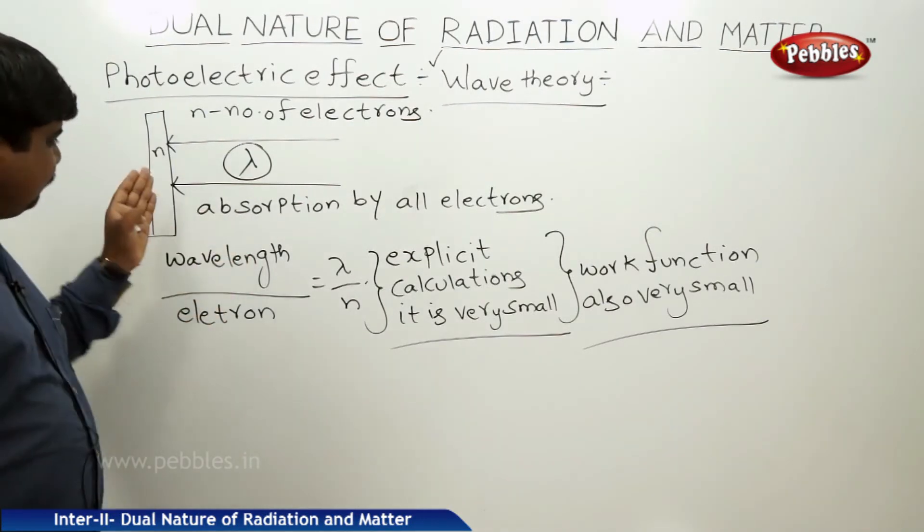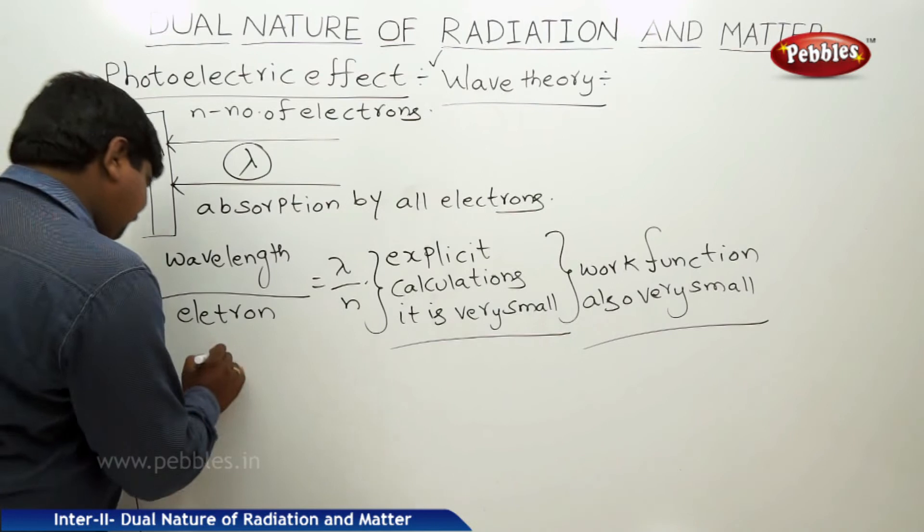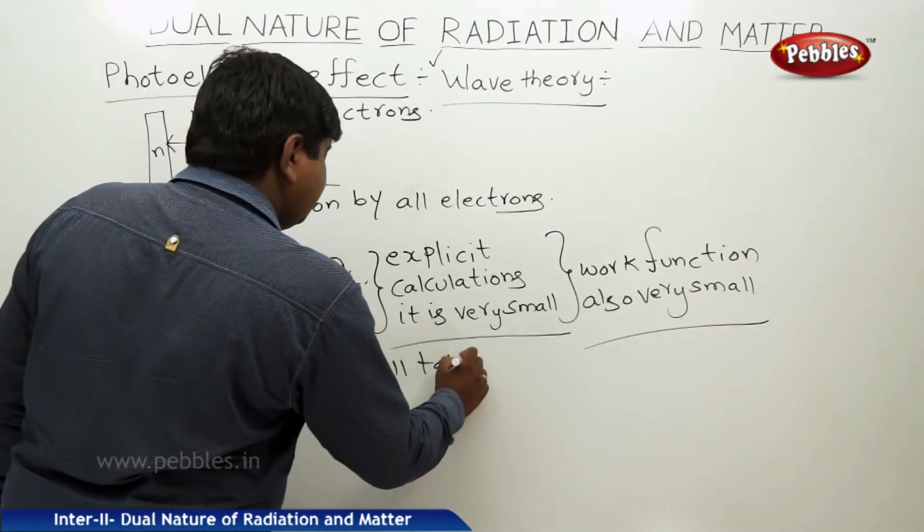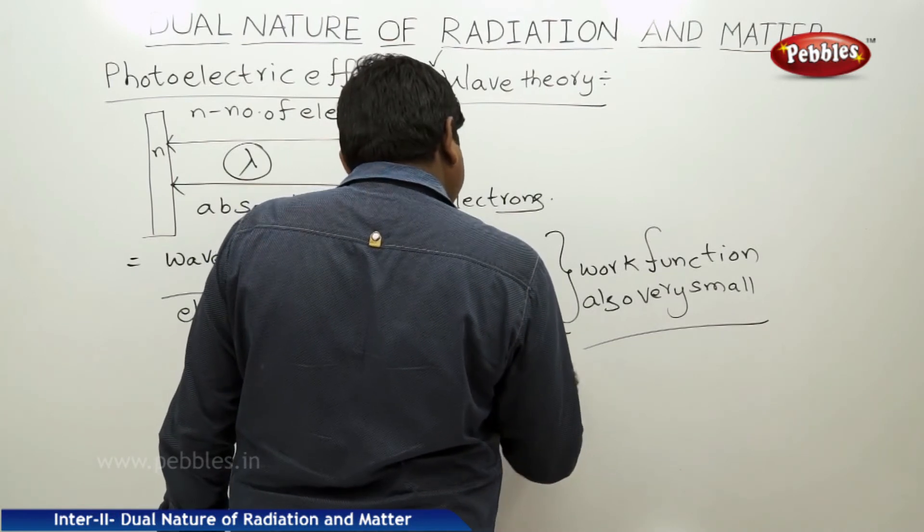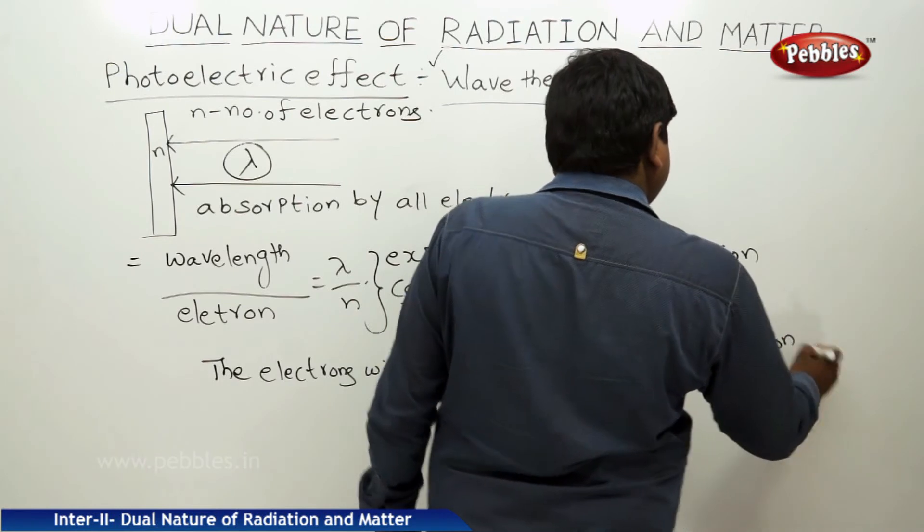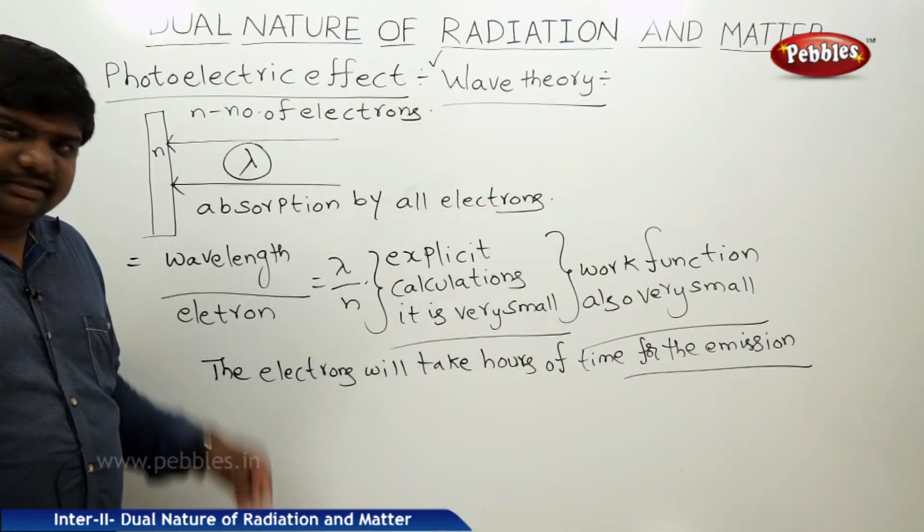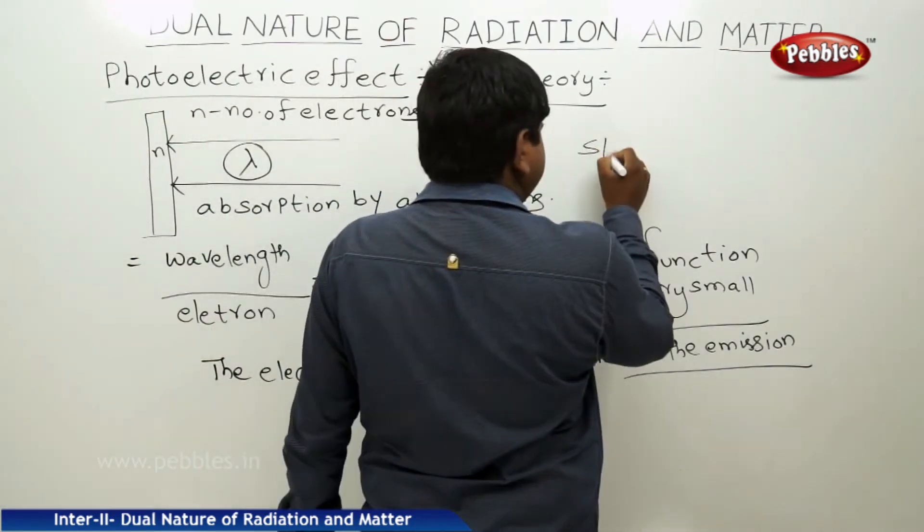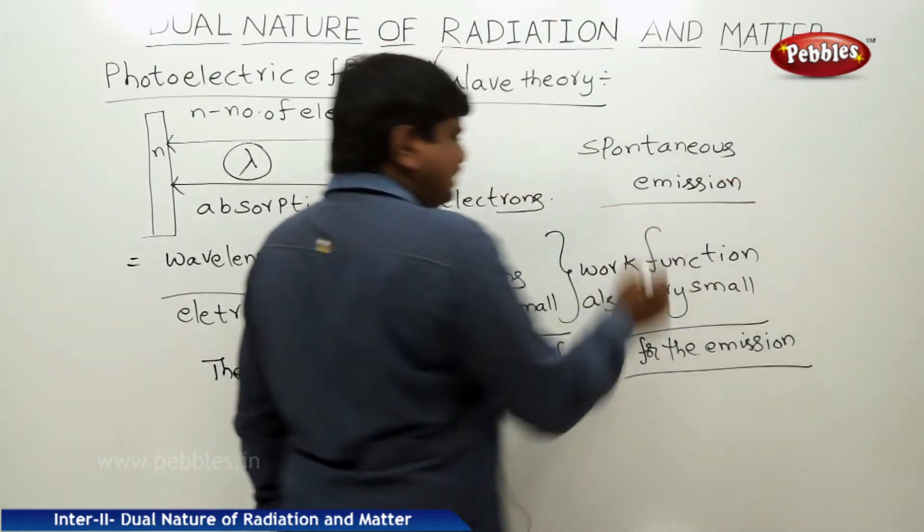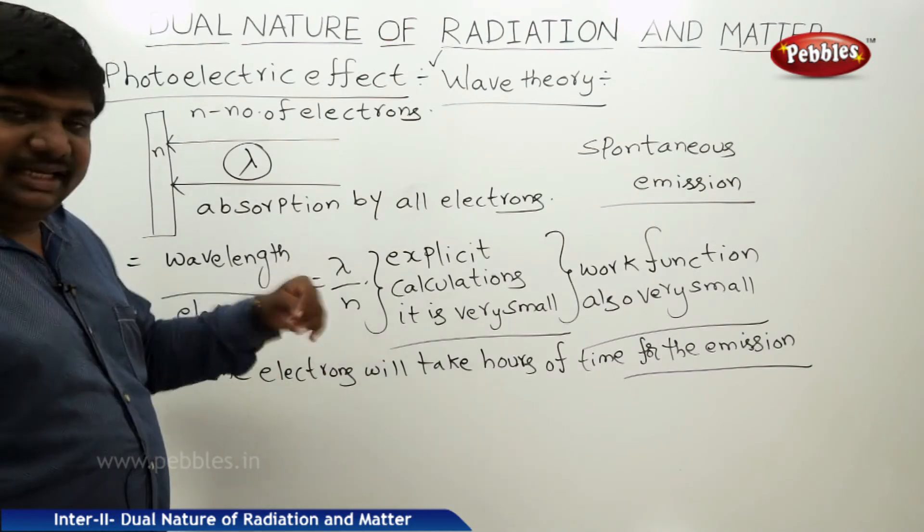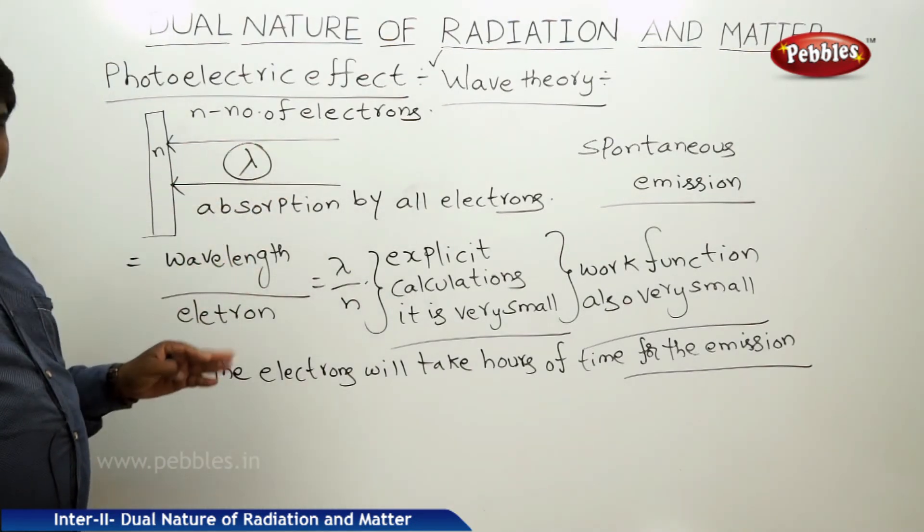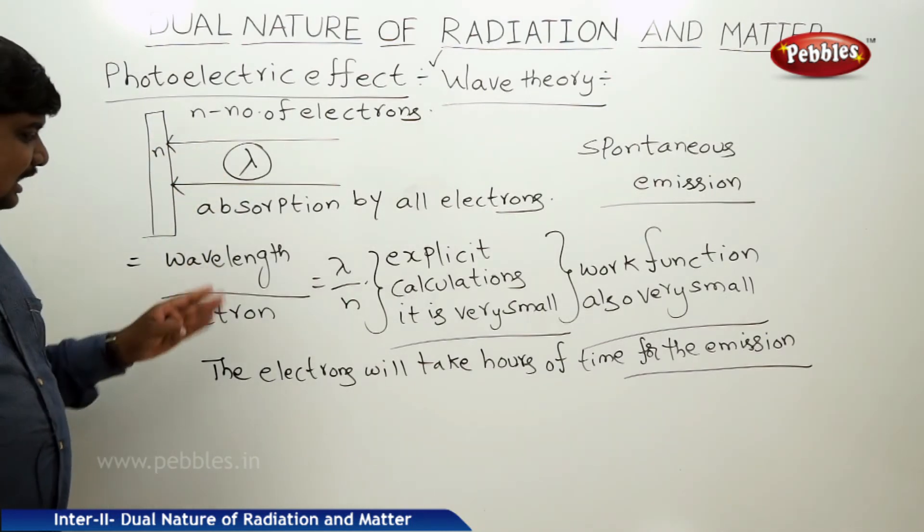If the wavelength absorbed by each electron is very small, then its work function is also very small. The electrons will come out of the metal and it will take some power. This one will take hours of time for the emission. This point is a contradiction for the spontaneous emission. How successfully Einstein has overcome these failures in his theory we will discuss now. In the metal surface of the metal, we have n number of electrons. We have to differentiate the lambda wavelength. This n electrons will absorb the wavelength, so we have to differentiate each electron from each electron.